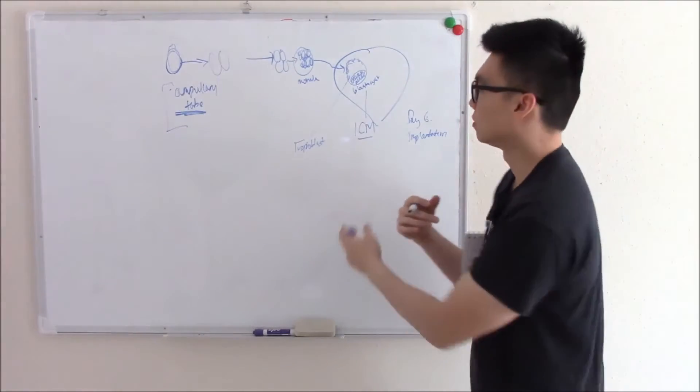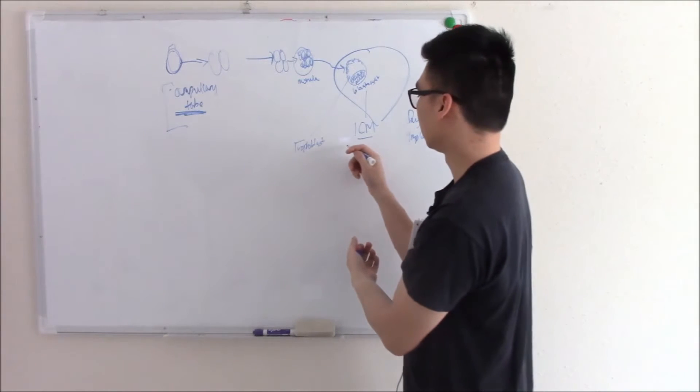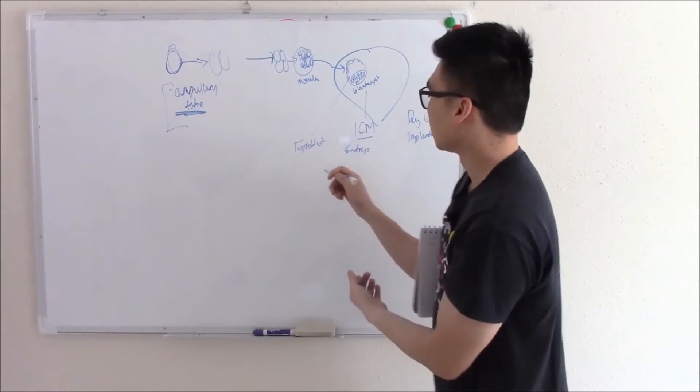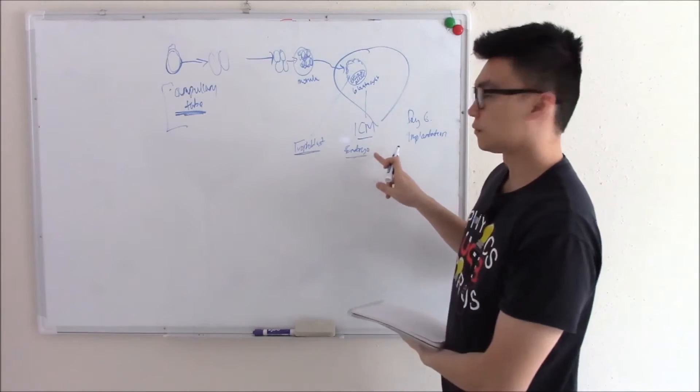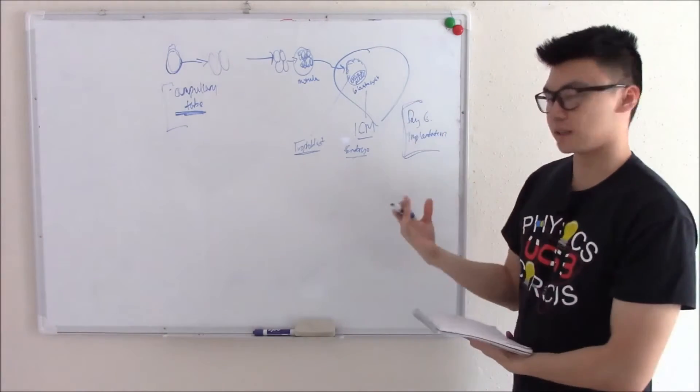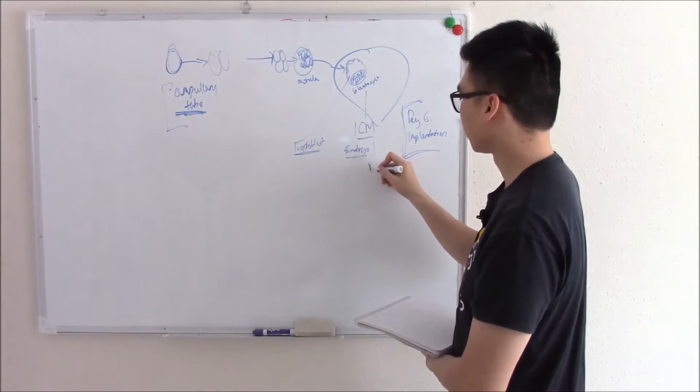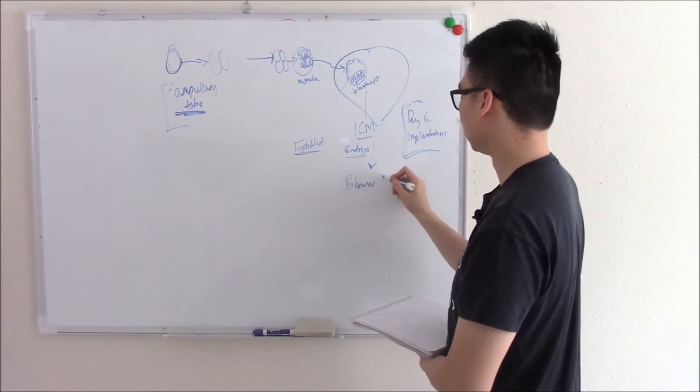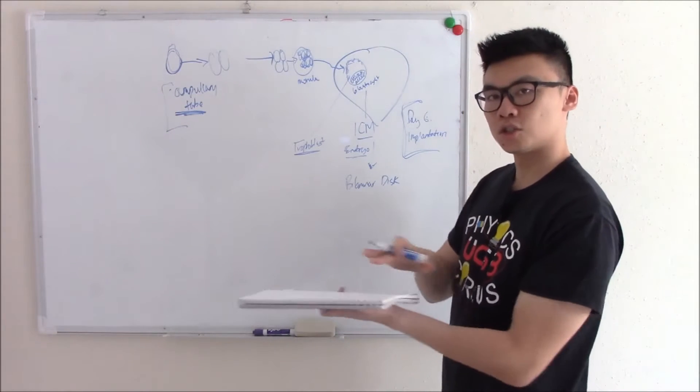What happens next? The ICM part of your blastocyst will become the embryo. The trophoblast will eventually become the placenta. Let's just follow this part, the ICM becoming the embryo for now. This is day six, week one is implanted. It'll start to grow. And after week two, the ICM becomes a bilaminar disc.